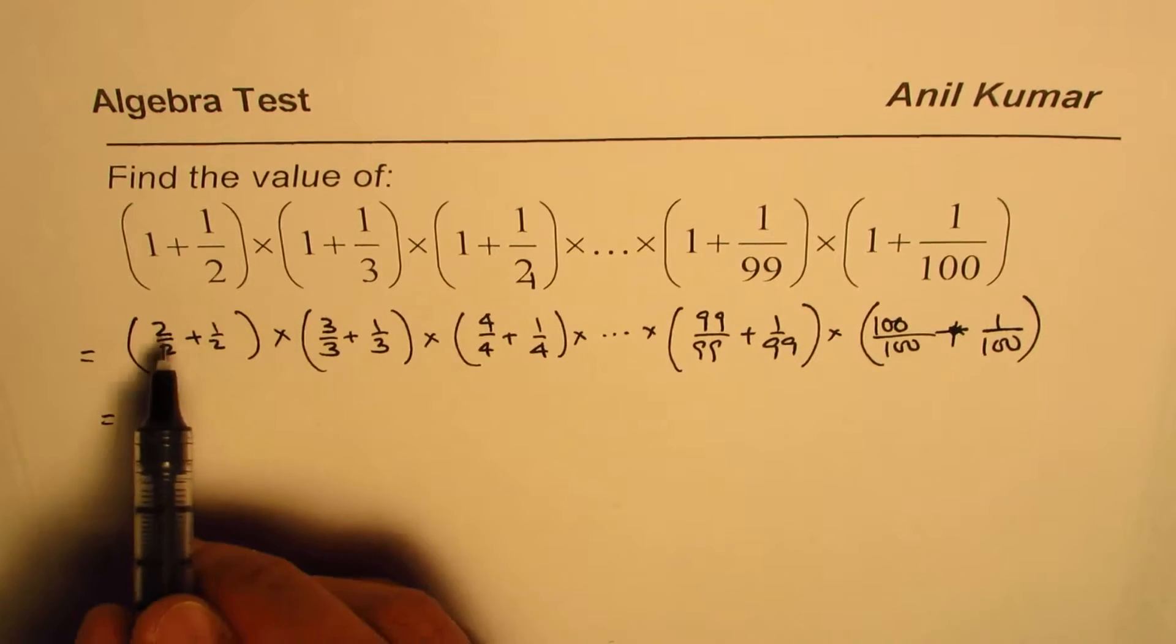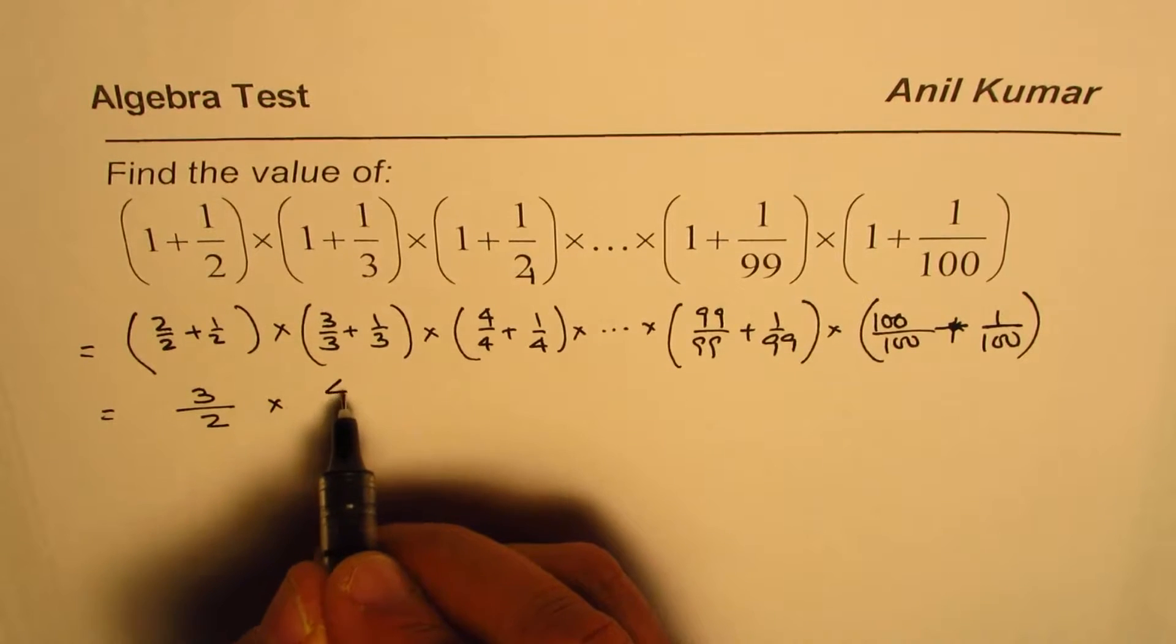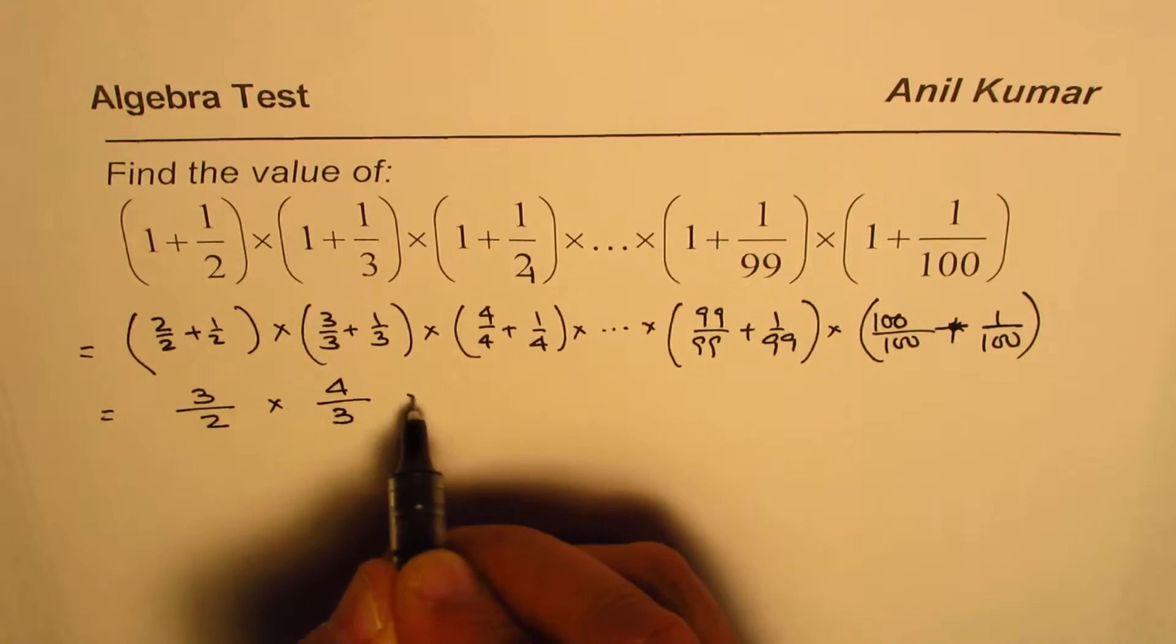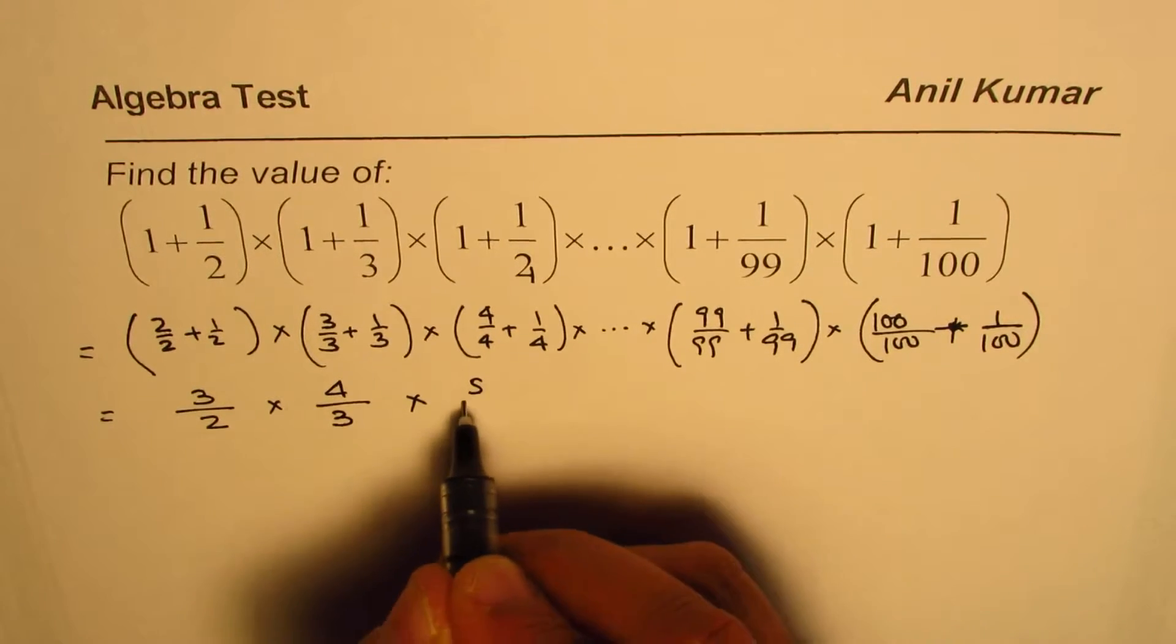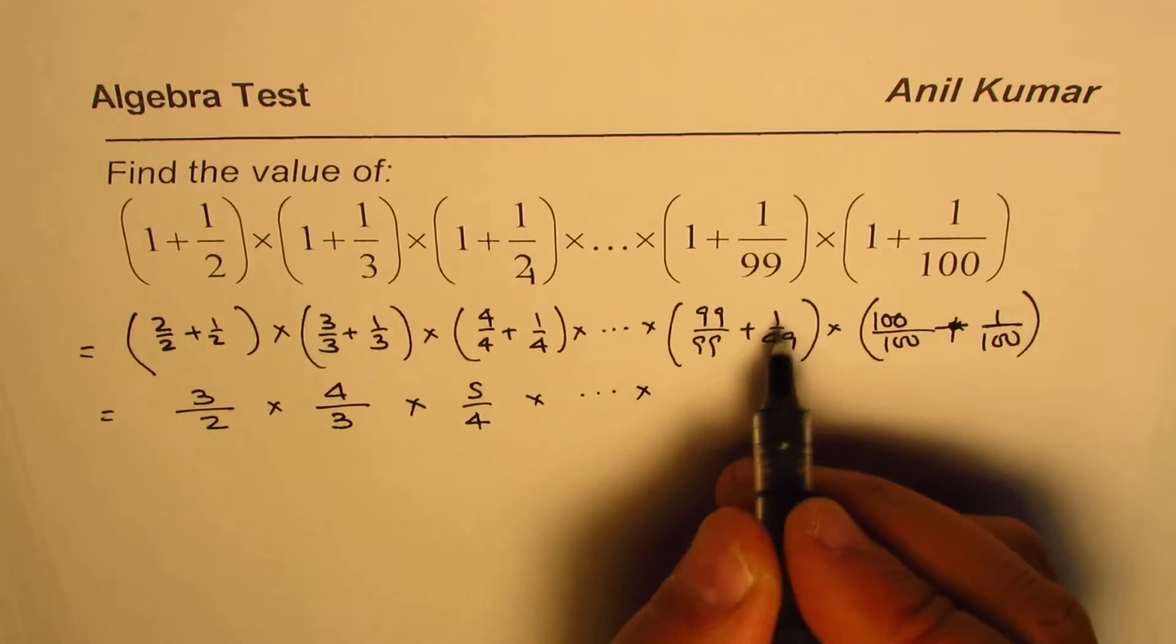Two plus one is three, so we get three over two times three plus one is four, four over three times four plus one is five, five over four, and so on. And ninety-nine plus one is one hundred over ninety-nine.